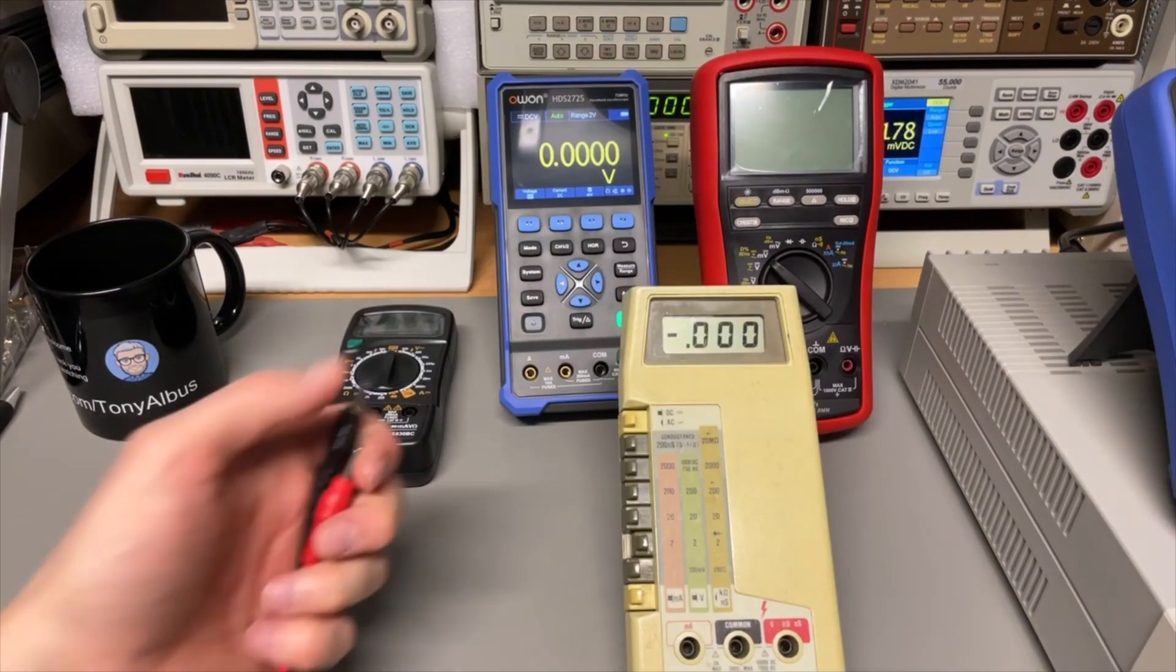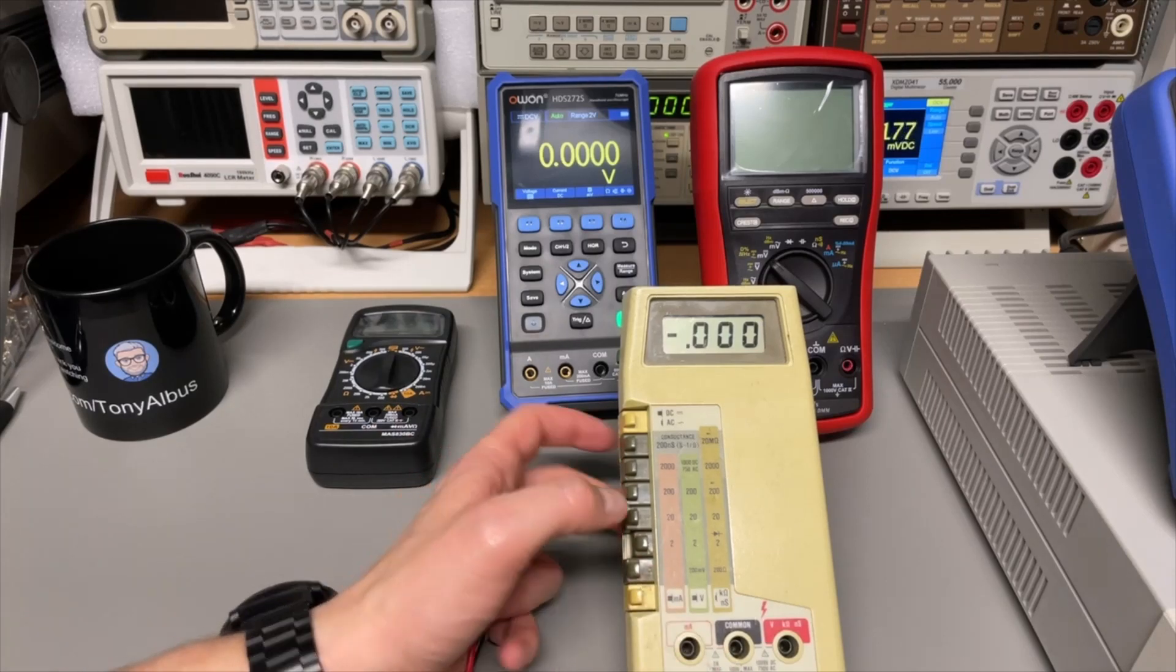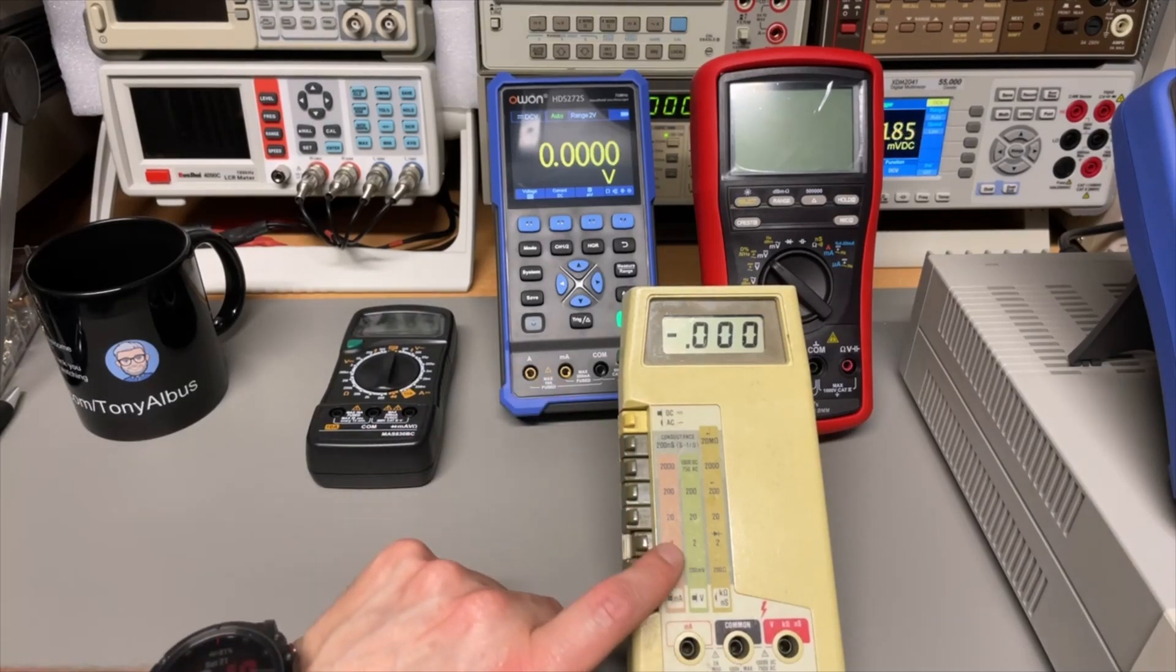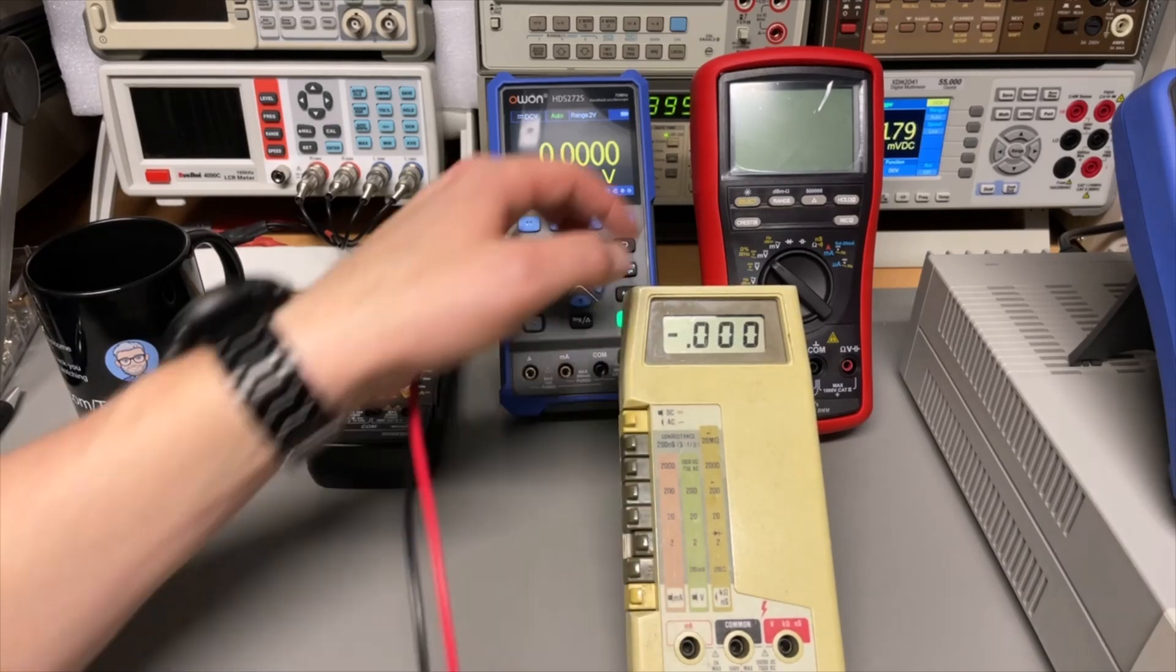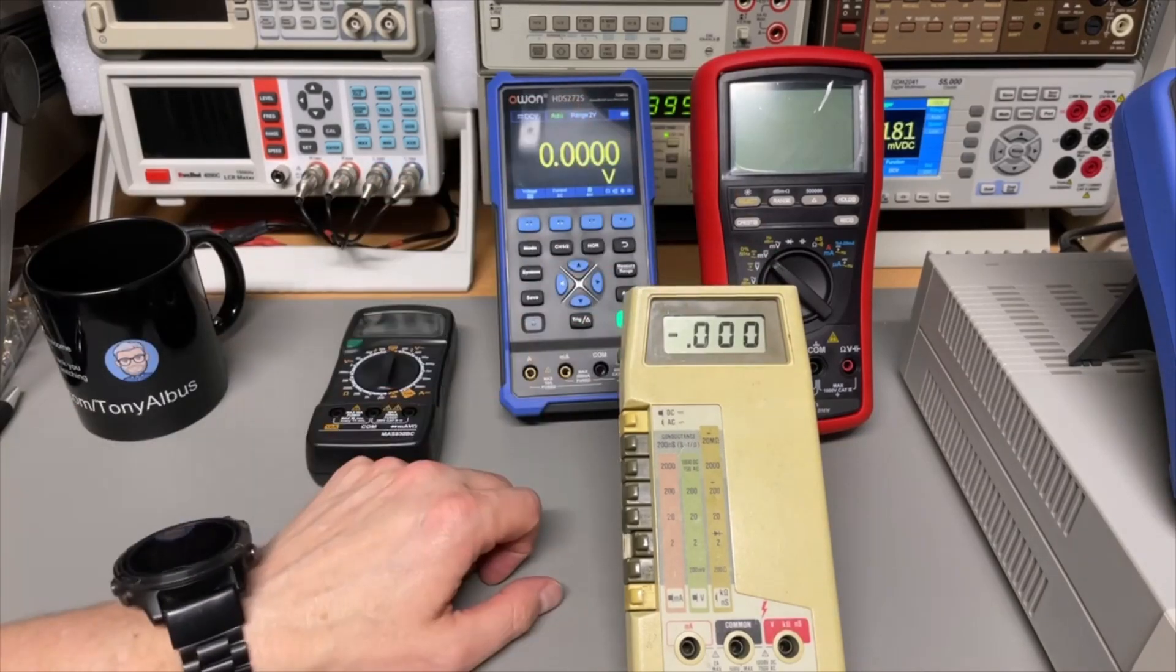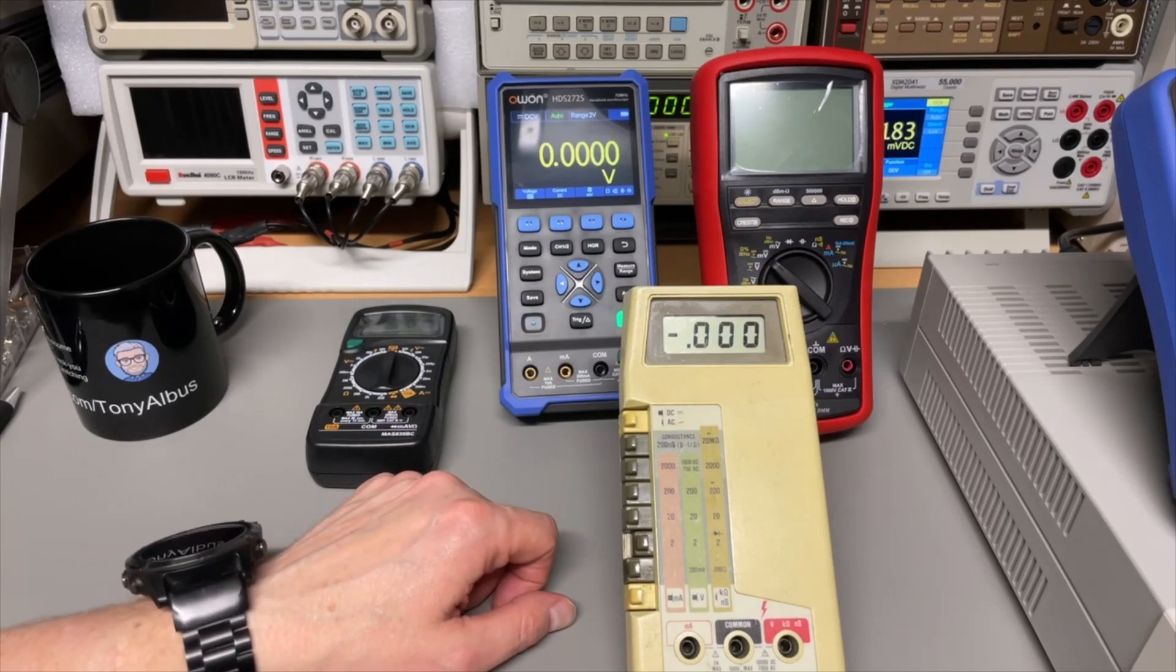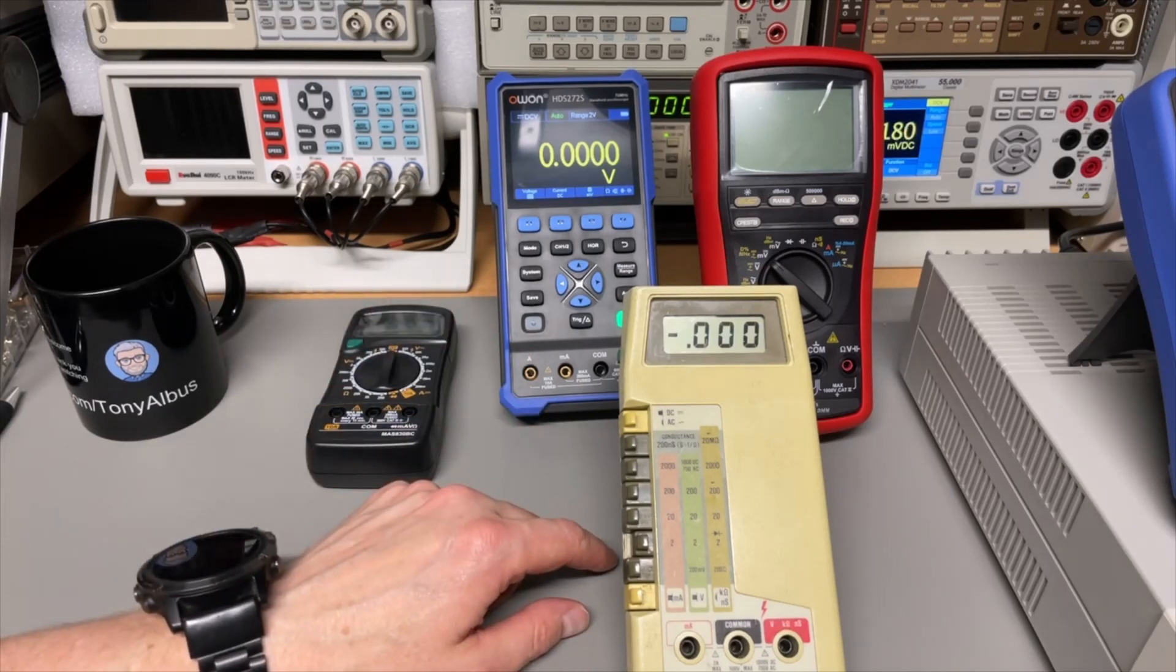And the same is here for this old Fluke meter. This is the 8020. And you can also see here, this really goes from a scale from 2 to 20 to 200. So, this one is exactly the same. What it will maximum display is 1, 9, 9, 9. So, is it a three-digit? No. Is it four-digit? Sometimes. So, this is also a three and a half digit.